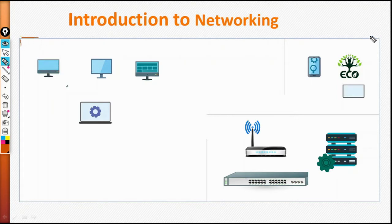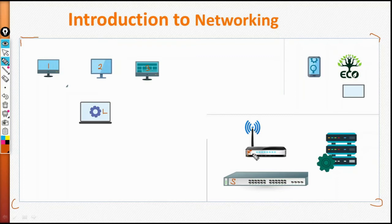I want you to assume this is an office environment. We have a number of desktops — Desktop 1, Desktop 2, Desktop 3 — and we have one laptop. In the same office we have a switch and we have a router, and we also have a server. This is an iPad and this is a mobile phone. We want to make sure that these devices can communicate amongst each other.